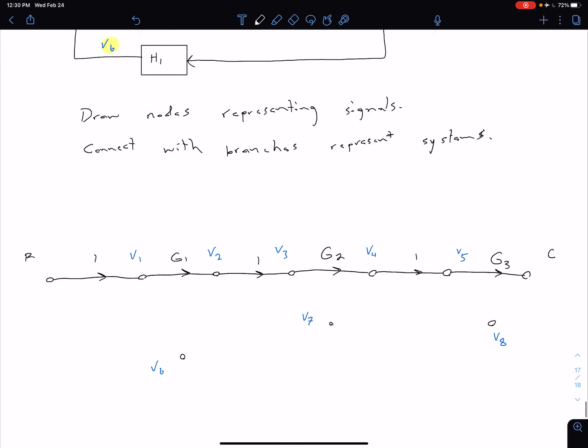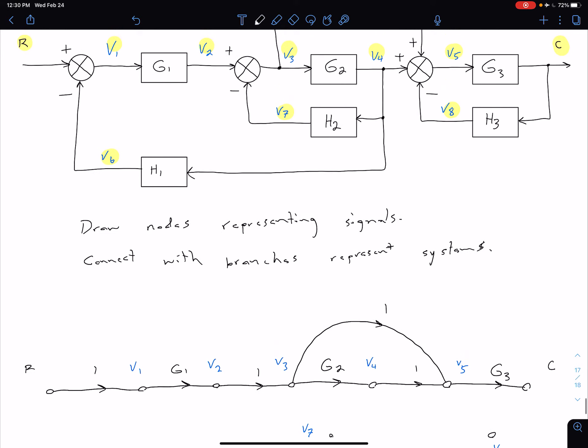So I can now have a signal coming from, or a branch, coming from signal V3 to signal V5. In this direction, and again, that's just a one there. So now for our feedback path.